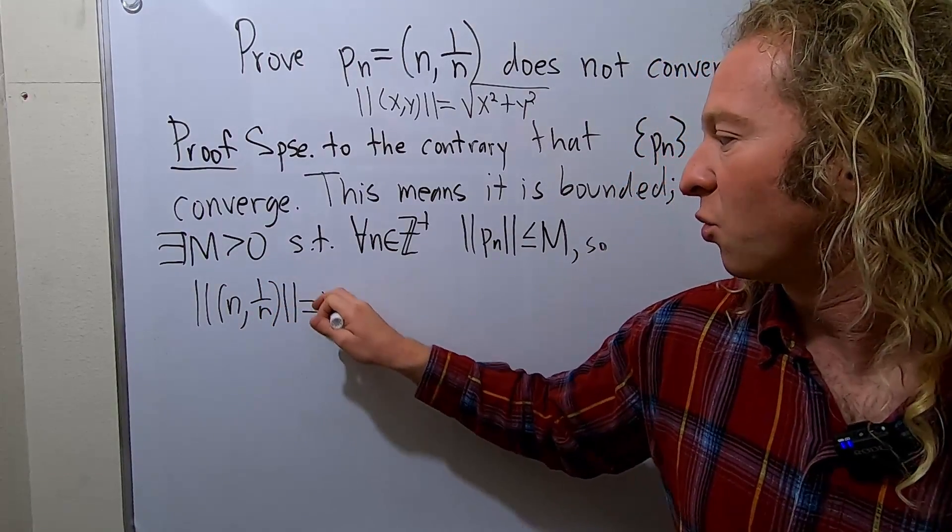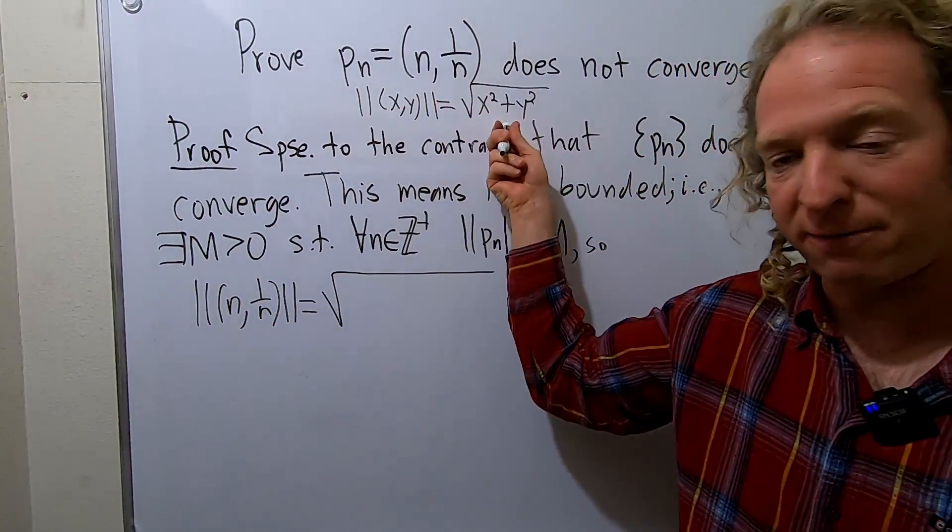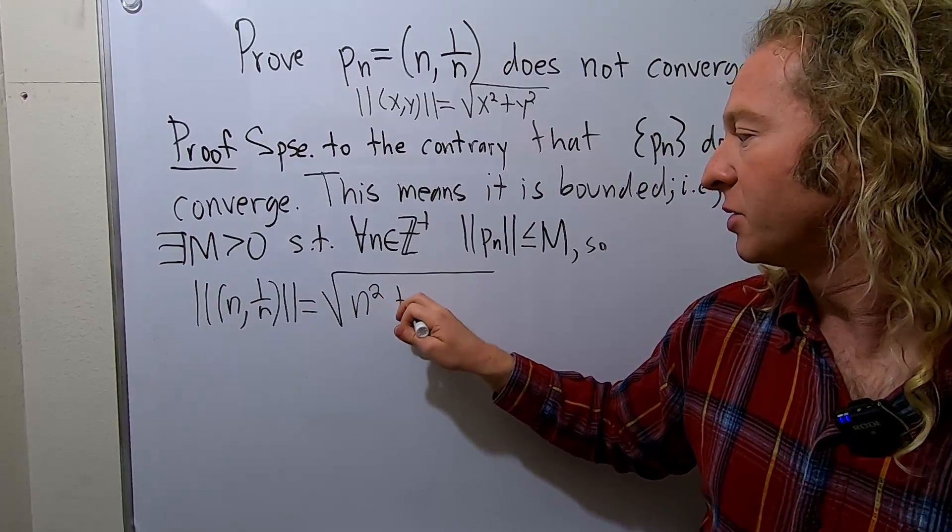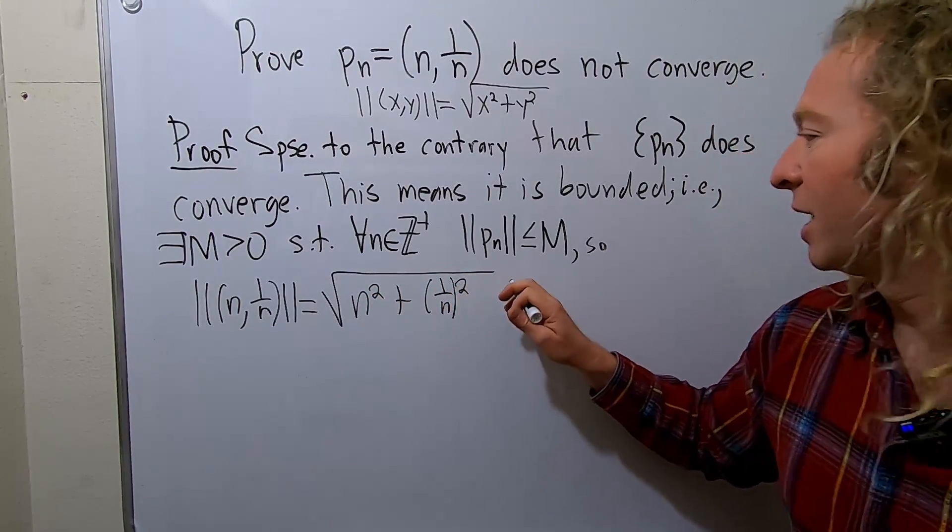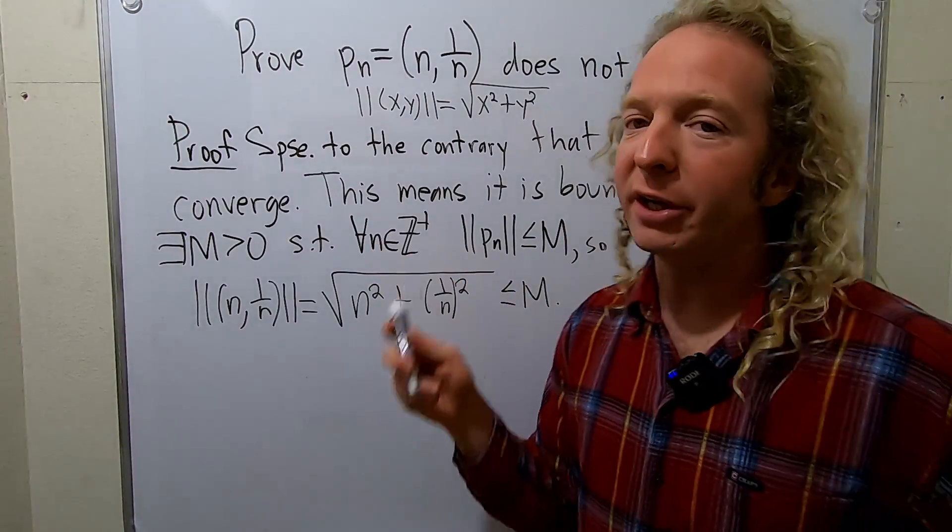So what is this? This is the square root using our definition of magnitude n squared plus 1 over n squared. And this should be less than or equal to m. And this should be true for all little n.